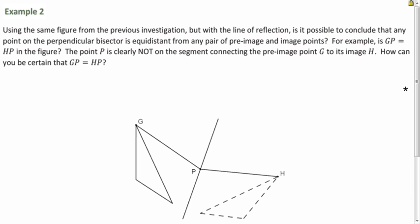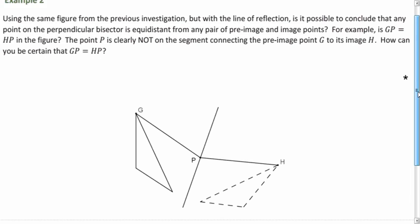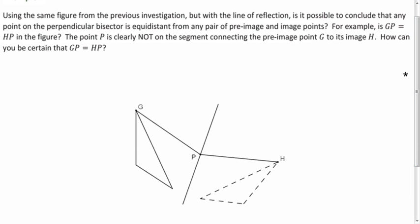So here we have a picture and point P is not on the segment that connects G and H. So it's not on this blue segment right here. And how do we know definitively that GP equals HP? So think about that for a moment and I'll show you the answer.